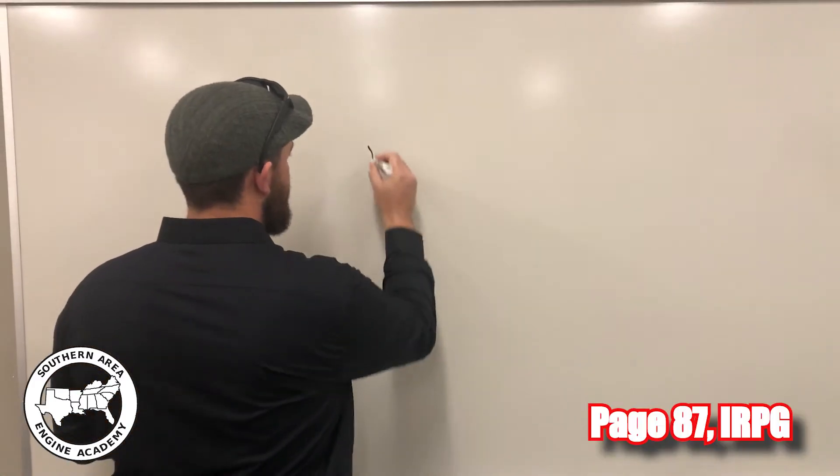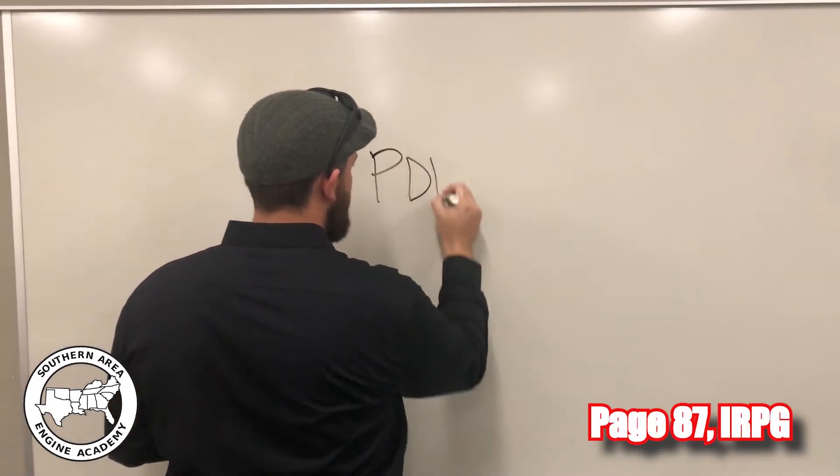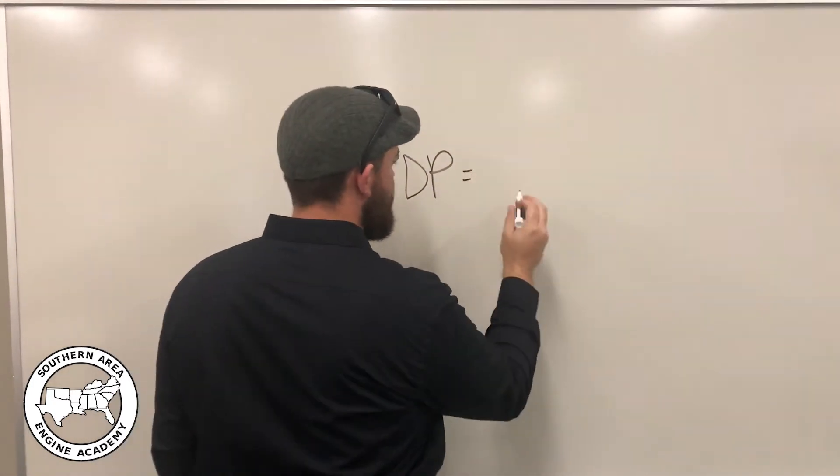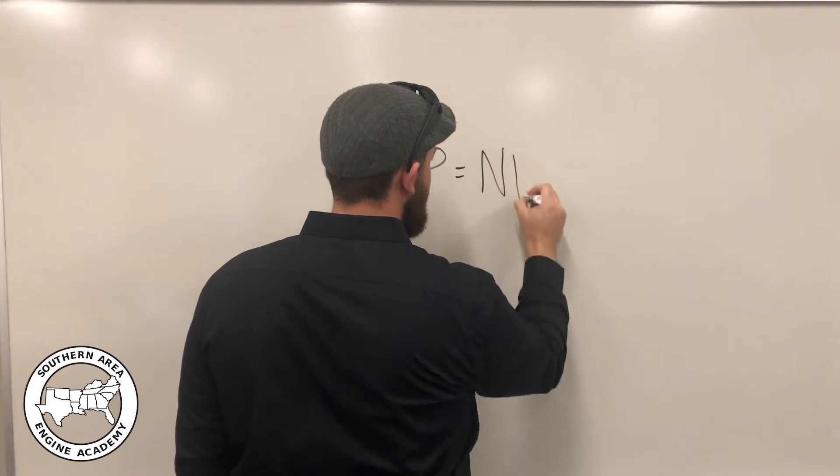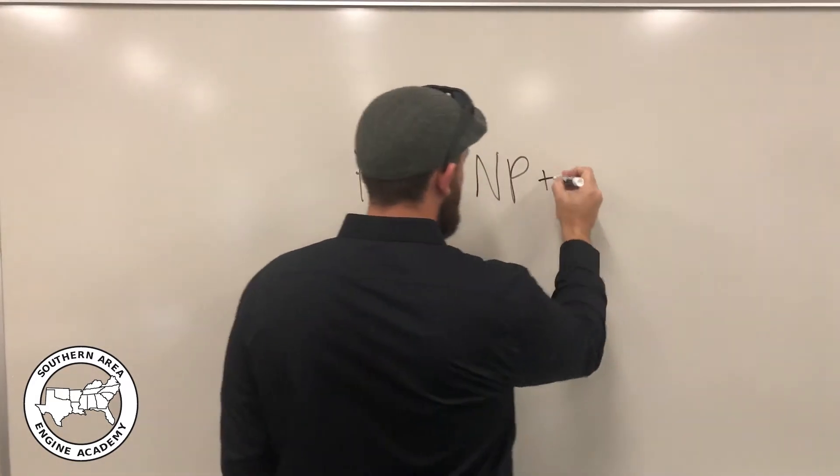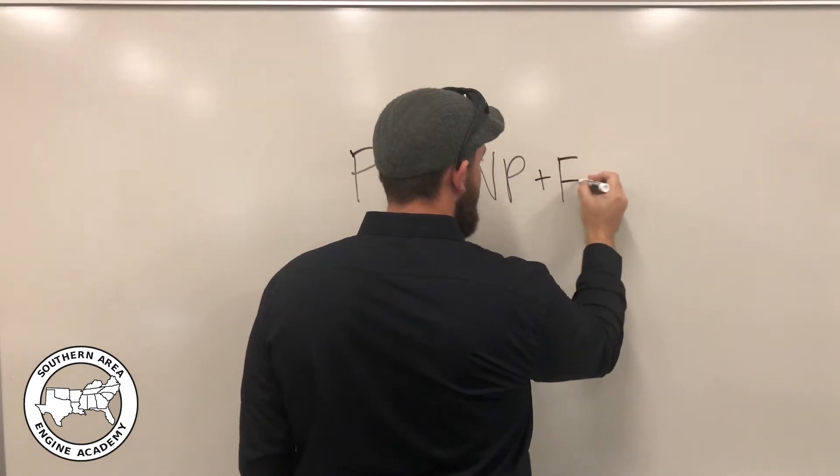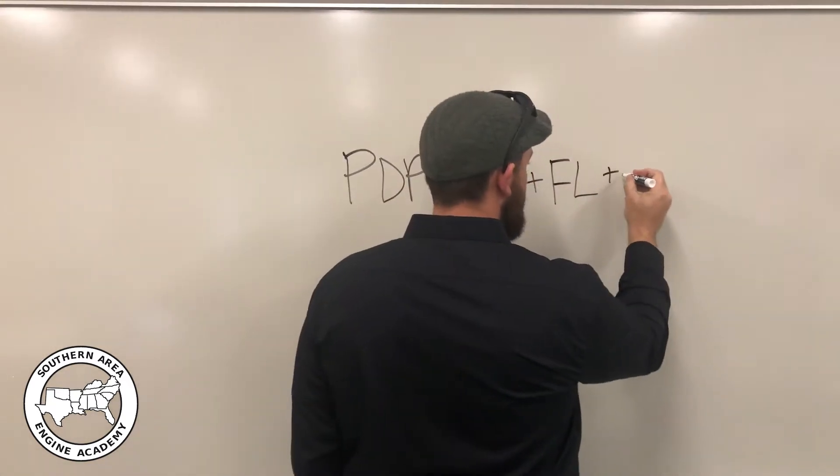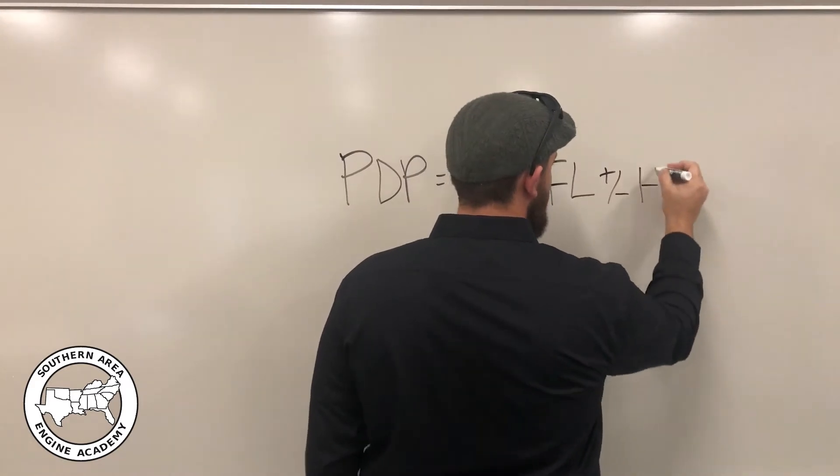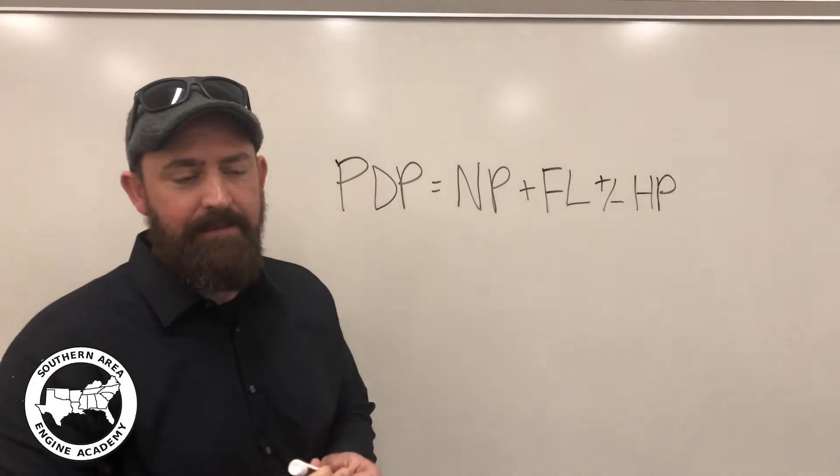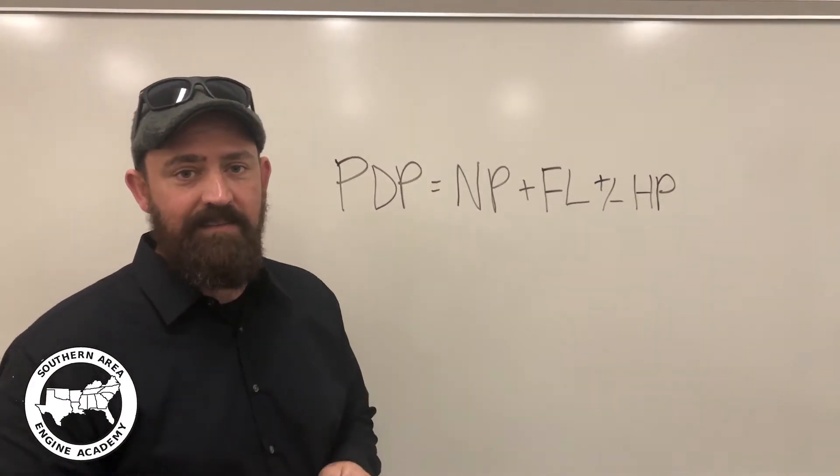First, we need our formula. We're looking for PDP, which is pump discharge pressure, which equals NP, or the nozzle pressure of the nozzle, plus FL, the friction loss of the hose lay, and plus or minus HP, which is the head pressure of the lay. And we'll explain why each one of these is important.